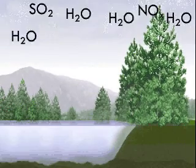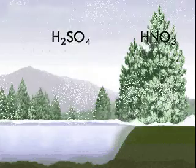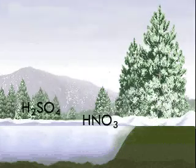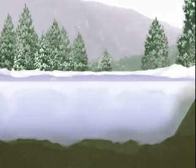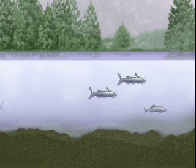Acid rain can seriously affect some lakes, especially in the spring when a pulse of acid enters the lake with melting snow. Lakes have buffering systems that keep the pH of the water near 7 or above. But over a number of years, acid rain can deplete the buffering capacity of the lake, causing the water to become acidic.